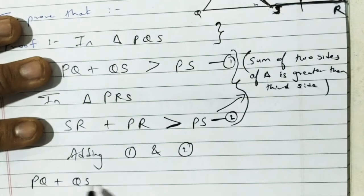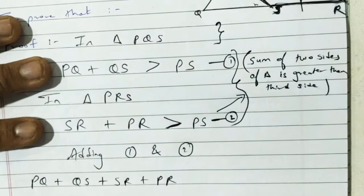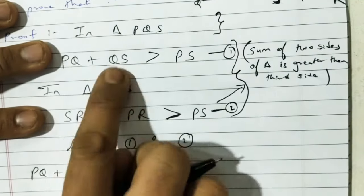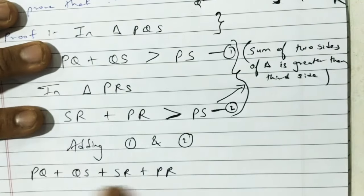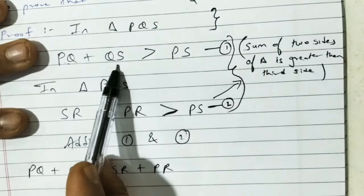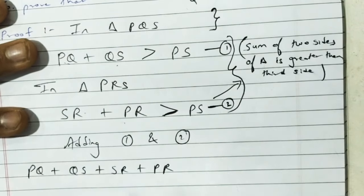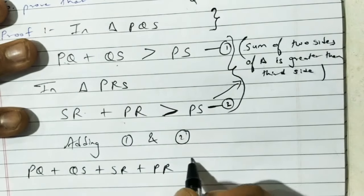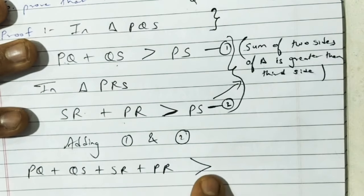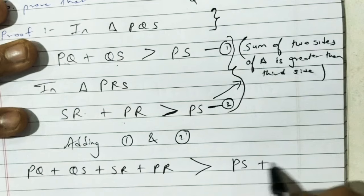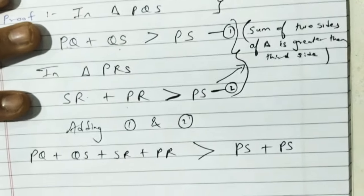Adding the left sides: PQ plus QS plus SR plus PR. The sign in the middle is greater than. On the right side: PS plus PS.